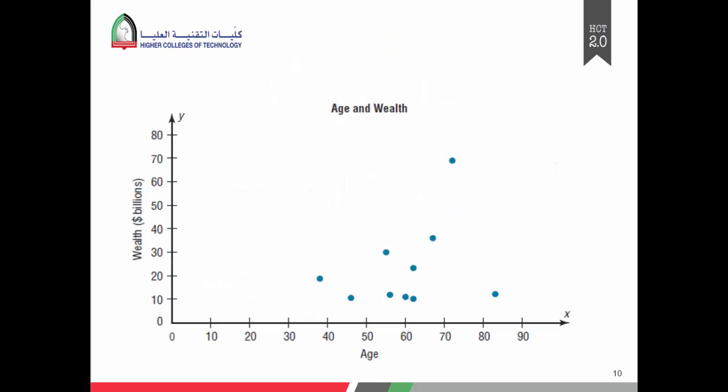When we look at the scatter plot, we don't see a relationship between age and wealth. The points are randomly on the scatter diagram, so there is no relationship between age and wealth.